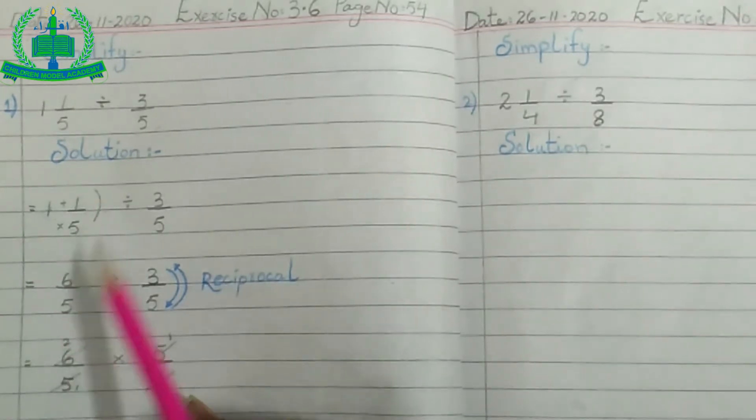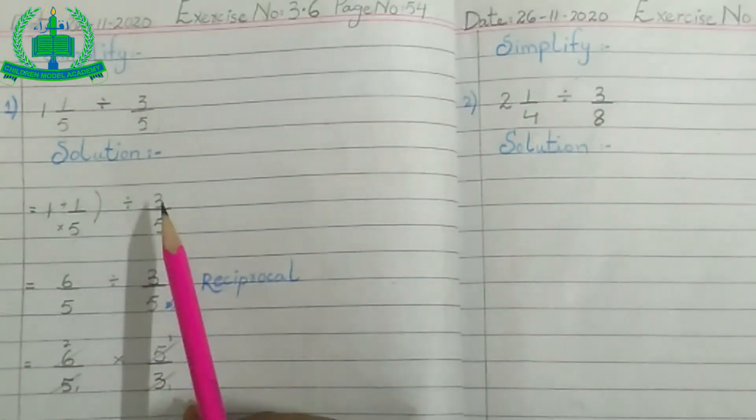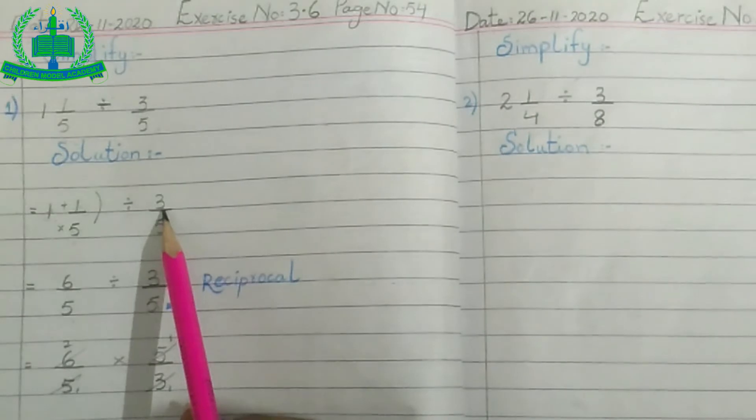Write 6 upon 5, show sign, divide, now write 3 upon 5.